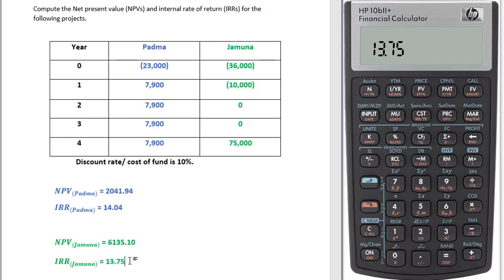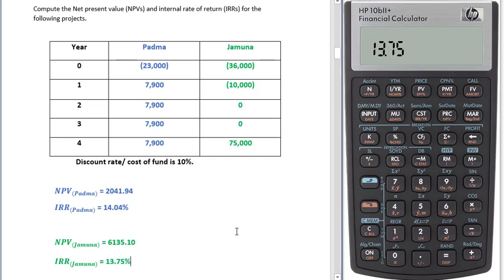The decision criteria for NPV and IRR: if NPV is positive we will accept the project; if NPV is negative we will reject the project. If IRR is more than our cost of capital we will take the project, and if IRR is less than our cost we will reject the project.